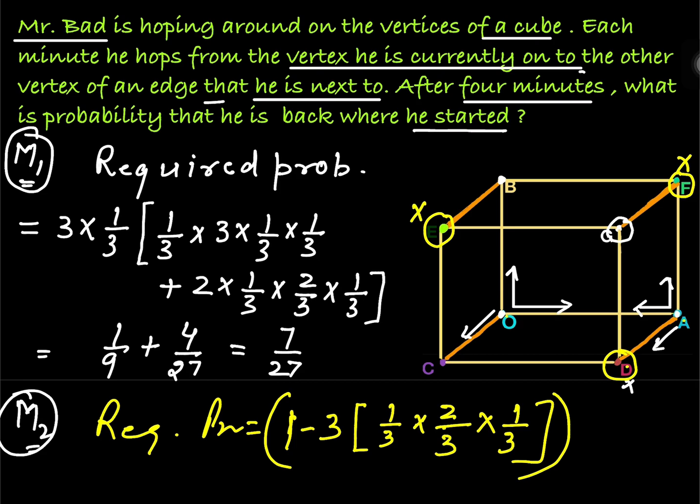Because we want him to come back at O after four steps. So he should not be at G. So the probability which I am writing is 1 minus 3 times whatever the expression we are getting, 1 minus this. This is the probability that he is not at G. Now after three steps, he is not at G. He cannot be at D. He cannot be at E. He cannot be at F. It means he is either A or B or C. So what is the probability from these three points? What is the probability he will come back to O in fourth step? It is 1/3.